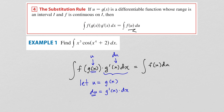By letting u equal the inside function, you can sometimes take a more complicated integral and turn it into a much simpler one. This doesn't always work, and what's most important in this process is the du portion — you must have the du portion in order to be able to complete this process. We'll talk more about that as we go through some examples.